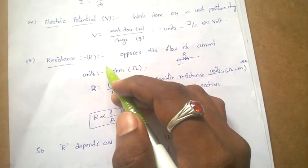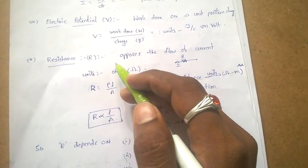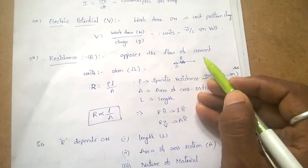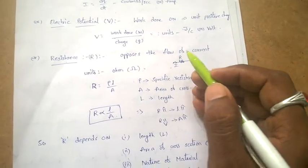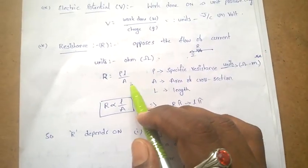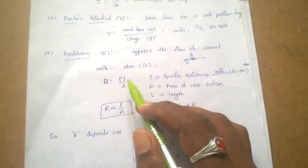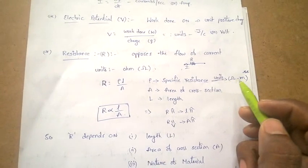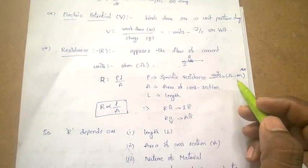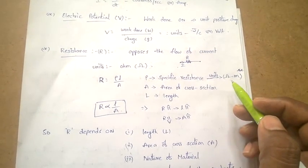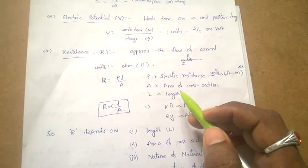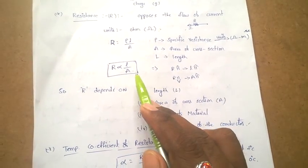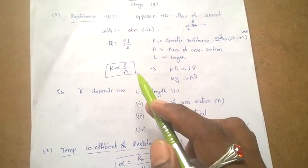What is resistance? Resistance is one which opposes the flow of current. It is denoted by the symbol R, and its units are ohms. The resistance R equal to rho L by A. Rho is nothing but specific resistance, and its units are ohm-meter — very important. A is the area of cross section, and L is the length. That means resistance depends on the length of the wire and the cross-sectional area.